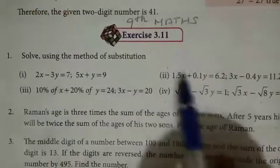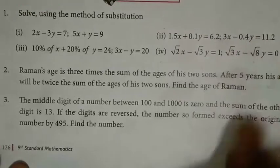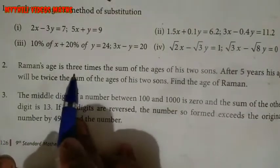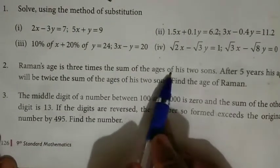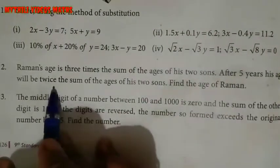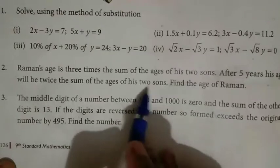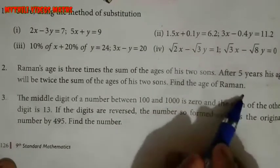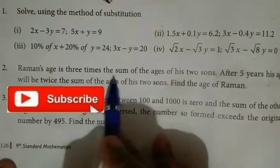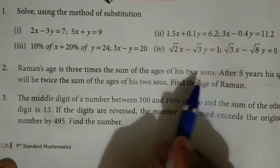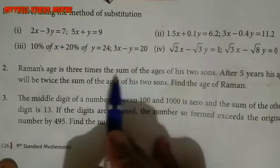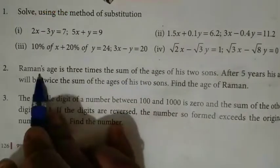Now we will see the second sum. Raman's age is 3 times the sum of the ages of his two sons. So two sons' ages added together, multiplied by 3, equals Raman's age.